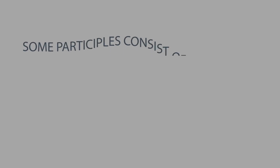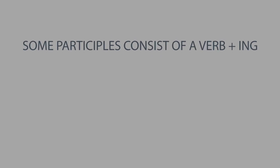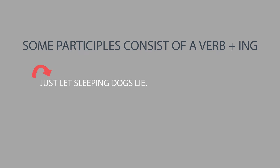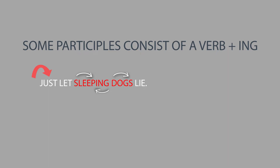Some participles consist of a verb plus -ing, as in these sentences. Just let sleeping dogs lie. Sleeping consists of the verb sleep plus the ending -ing, and it acts as an adjective in this sentence. It describes dogs and it answers the question, which ones?